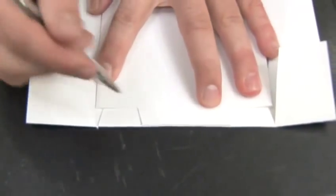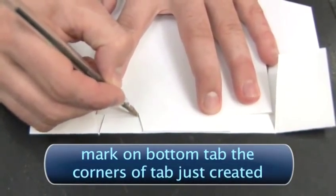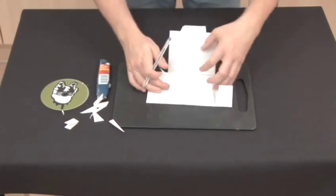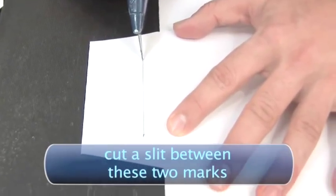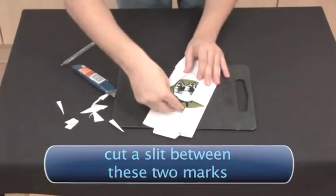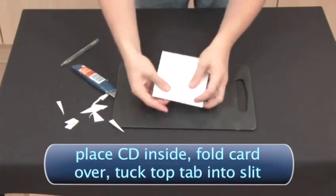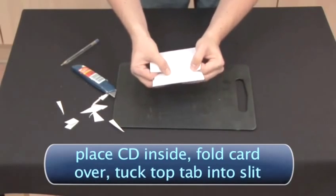Fold the card back in half and mark on the bottom tab the corners of the tab you have just created. Open the case back out and cut a slit between these two marks. Now simply place your CD inside and fold the card over, tucking the top tab into the slit you have just made. Done!